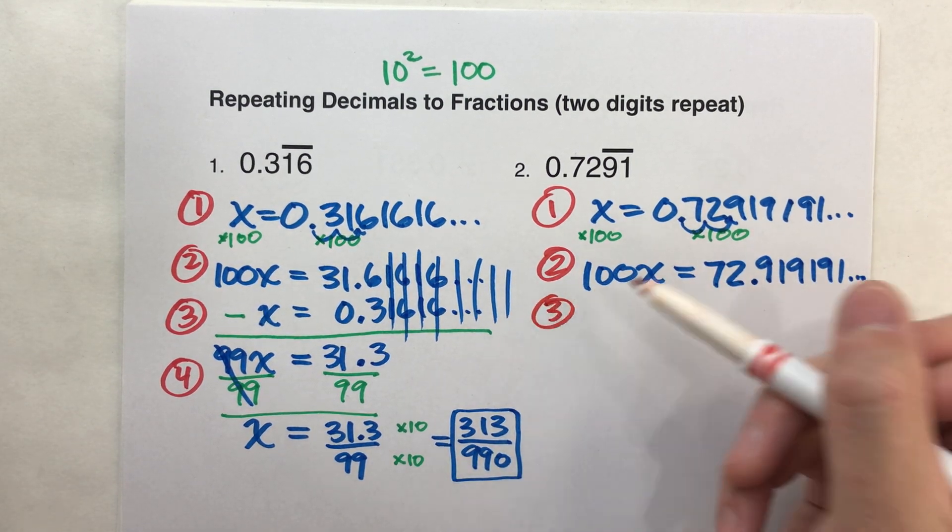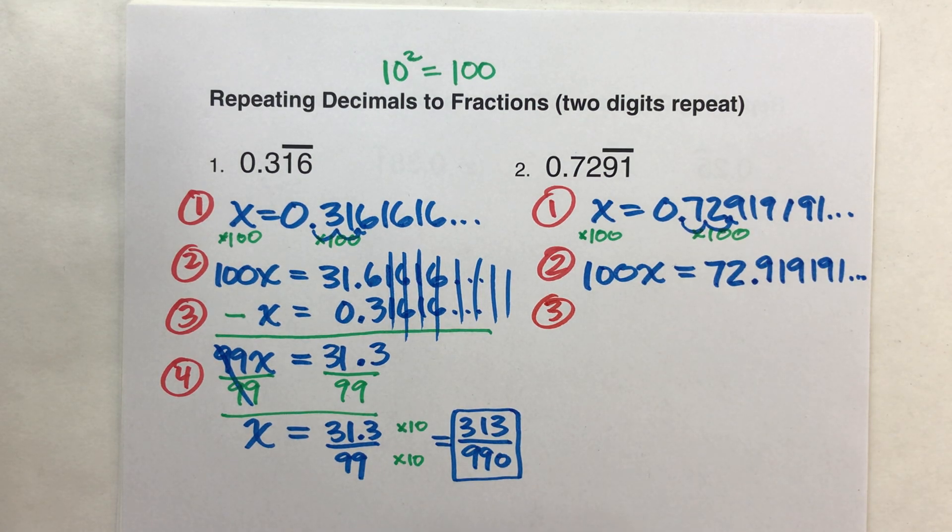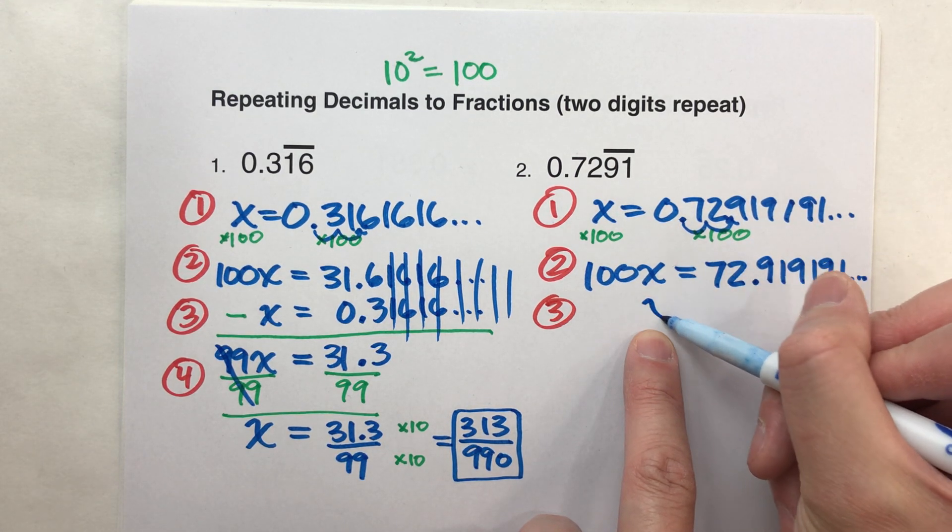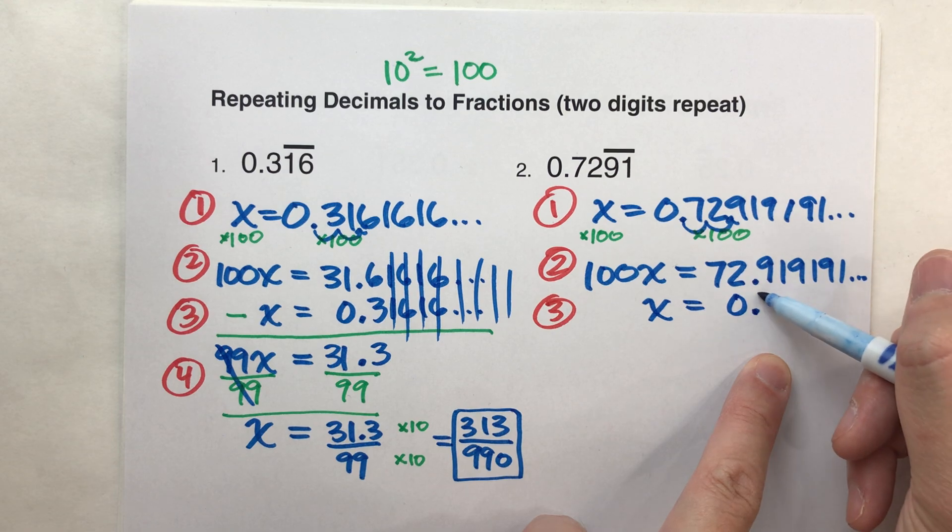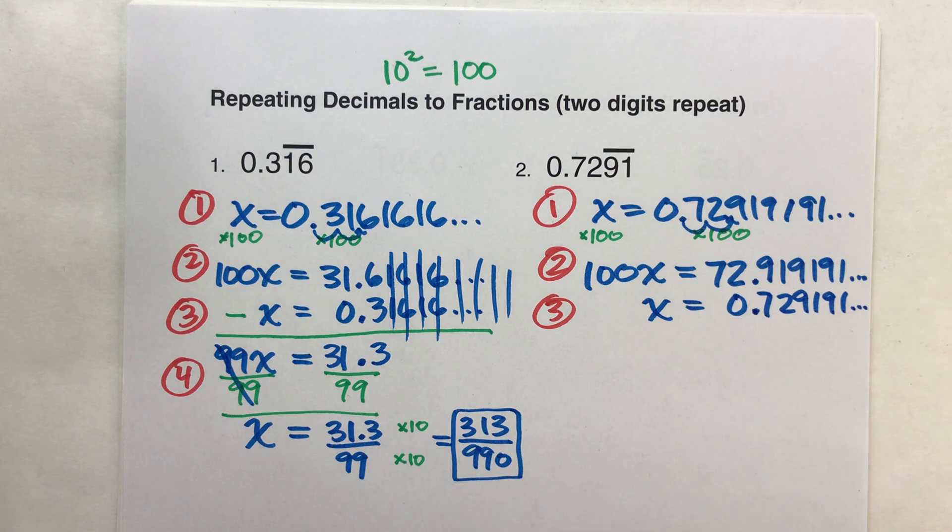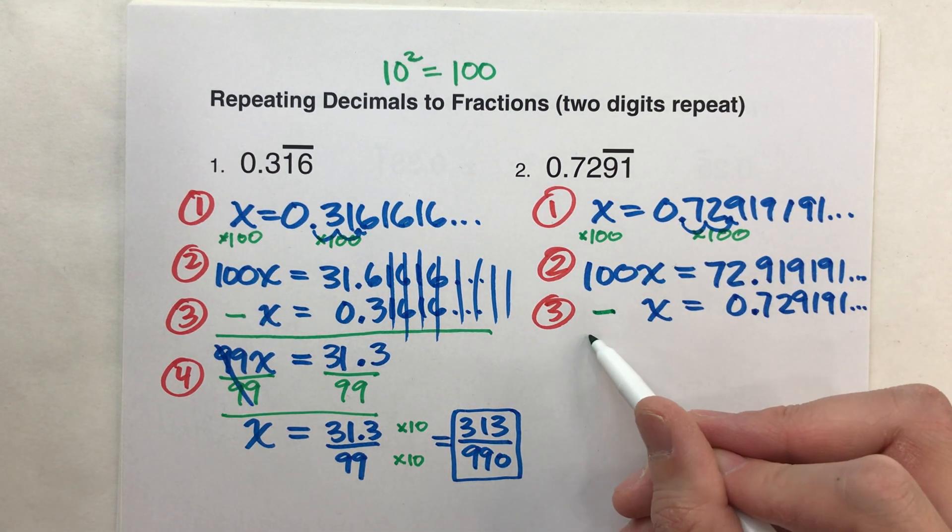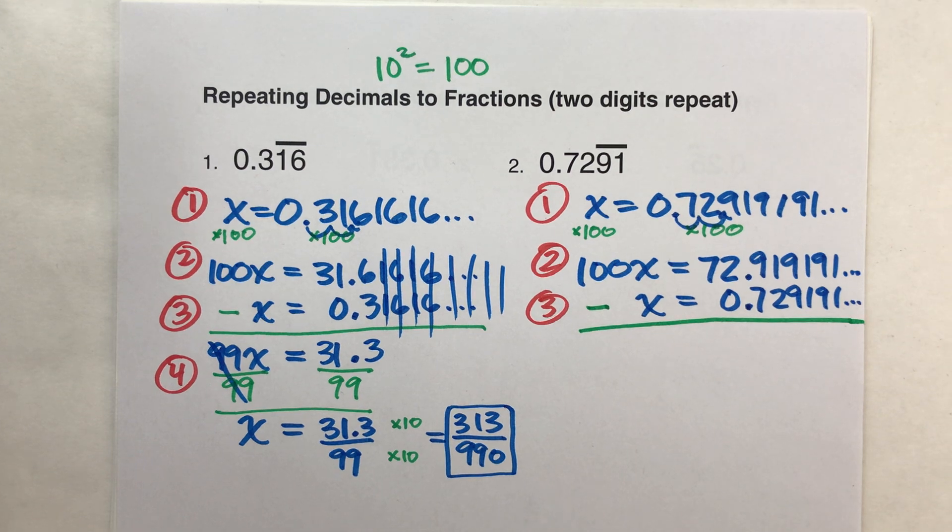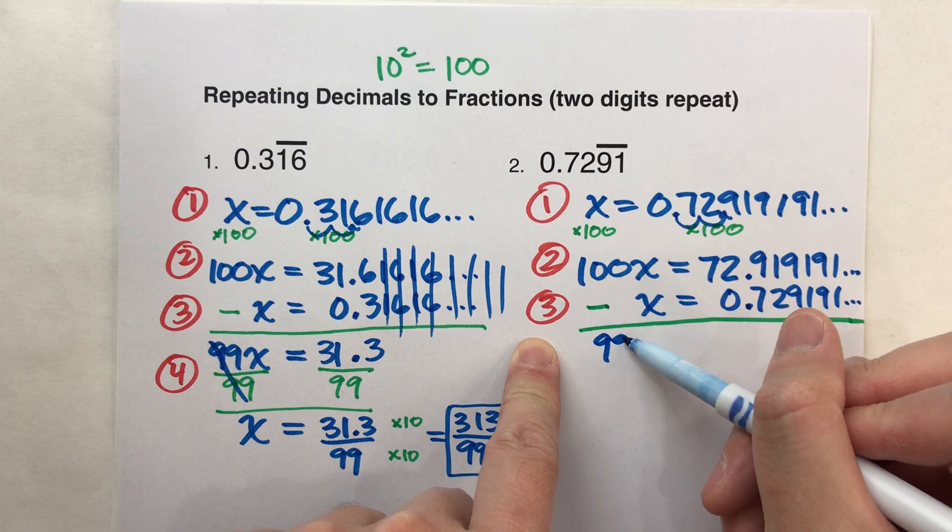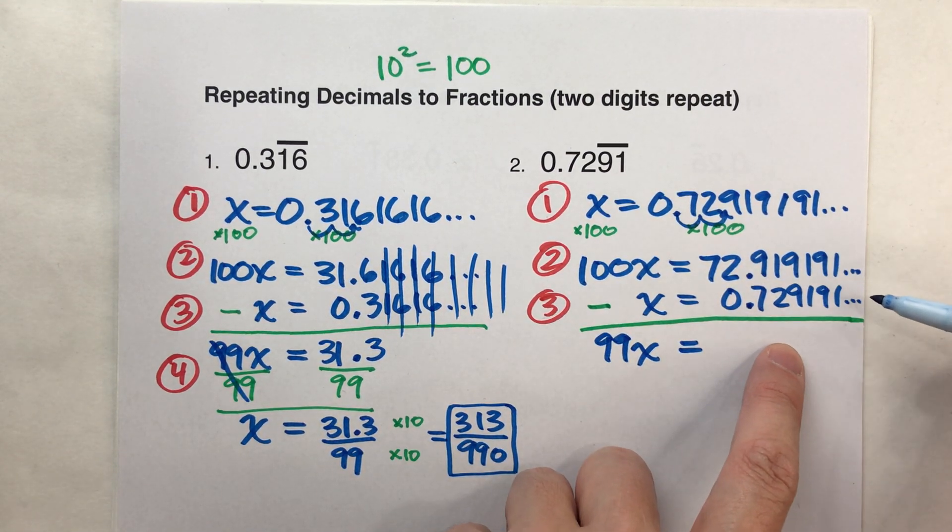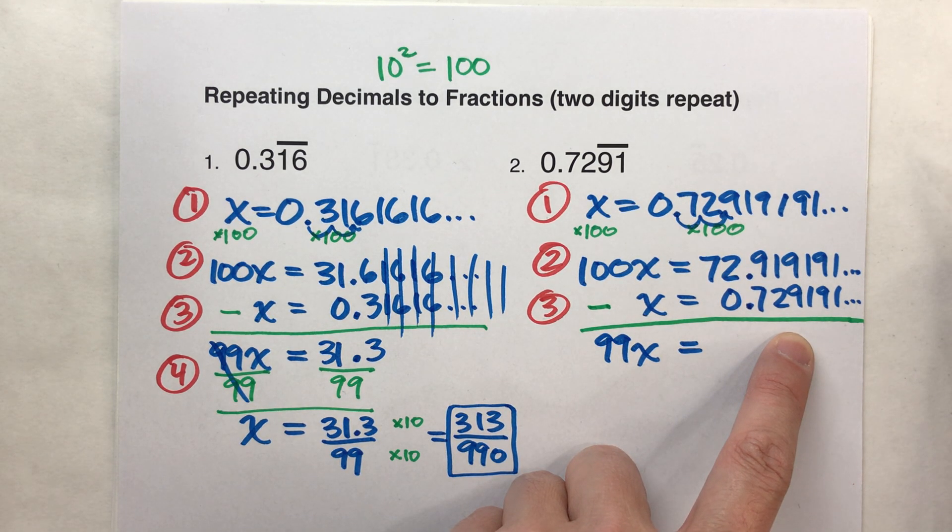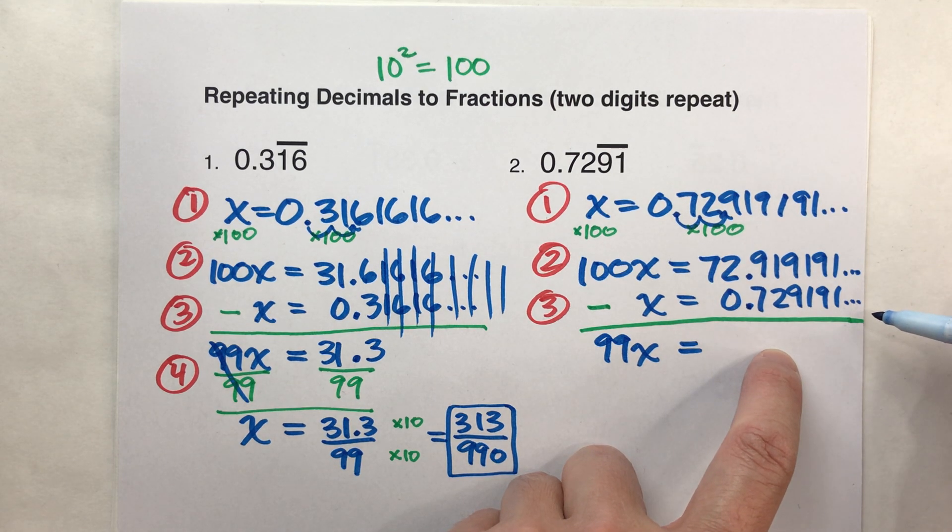We're ready for step three. Step three is to take this new equation and then take the old equation and subtract them. So I'm going to write this old equation underneath the new equation. 0.729191, et cetera, forever and ever. And here's my subtraction sign. I'm going to subtract them. So when we subtract them, what do we get? 100x minus 1x is 99x. That's the easy side. The other side looks complicated to subtract. But like I said before, all the repeating decimals, all the repeating digits will subtract off from each other.